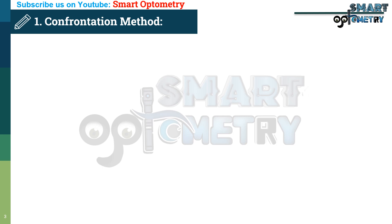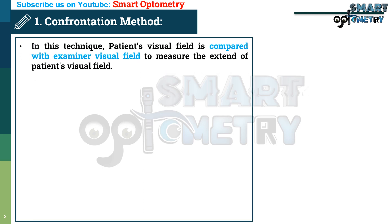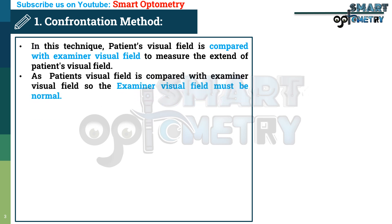Now let's discuss about the Confrontation Method. In this technique, the patient's visual field is compared with the examiner's visual field to measure the extension of the patient's visual field. Since the patient's visual field is compared with the examiner's, the examiner's visual field must be normal.